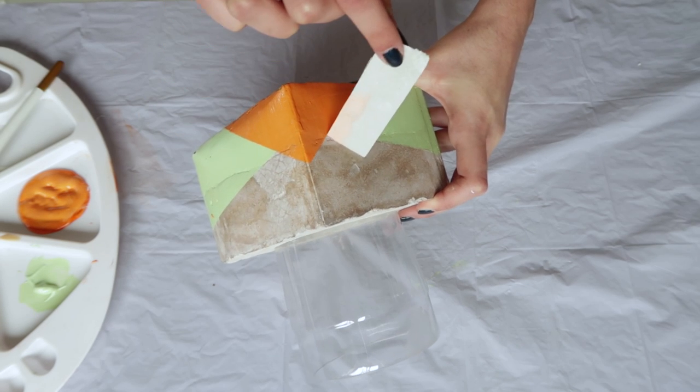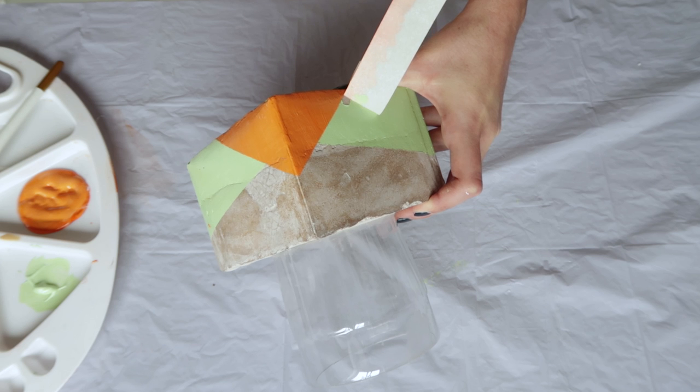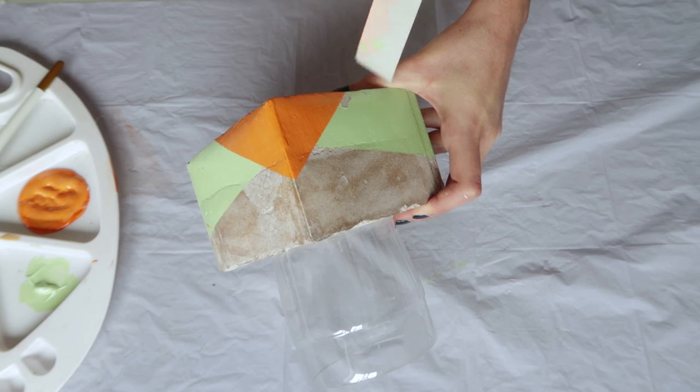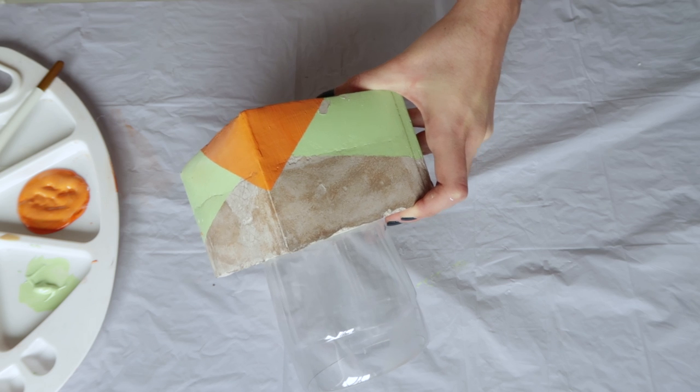You can see that when I took the painters tape, some of the green paint came off and I covered that by painting on top with the green paint again.